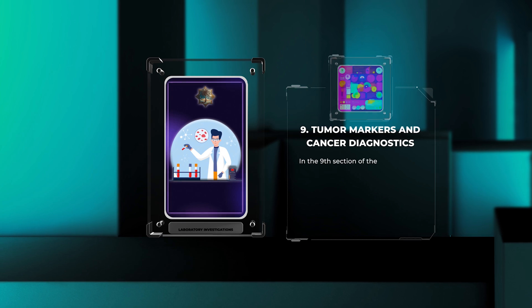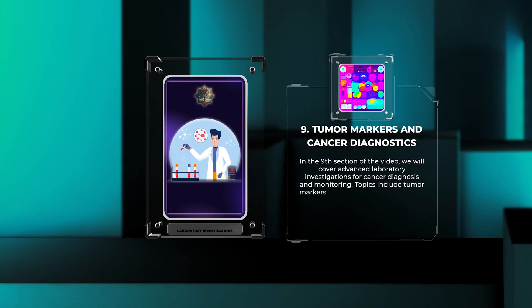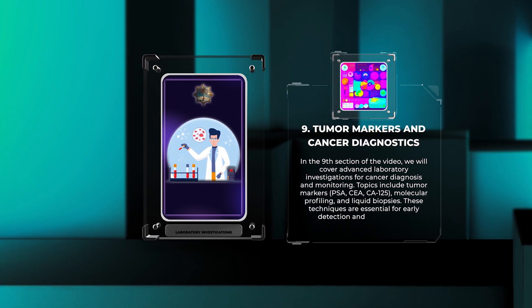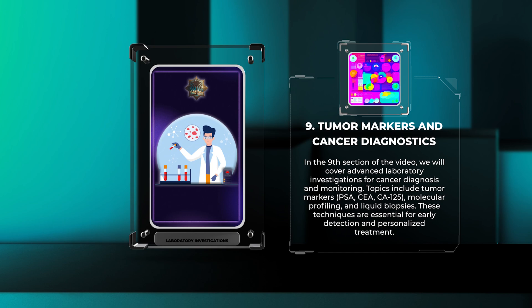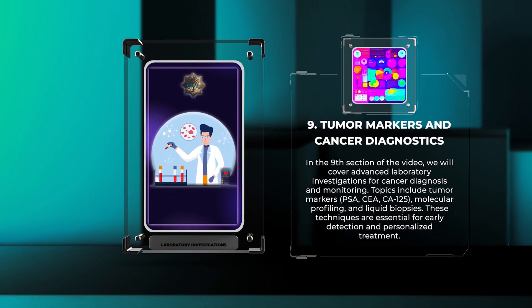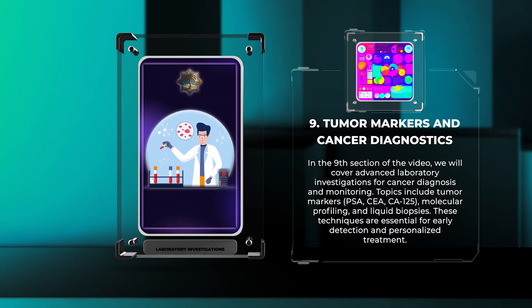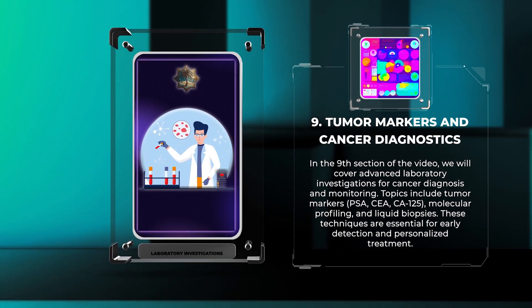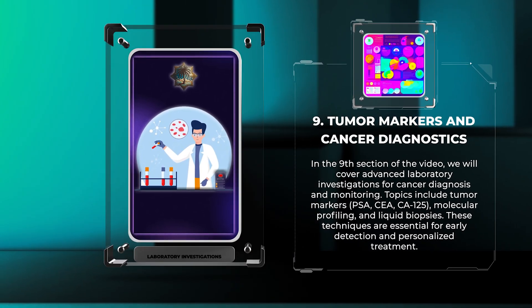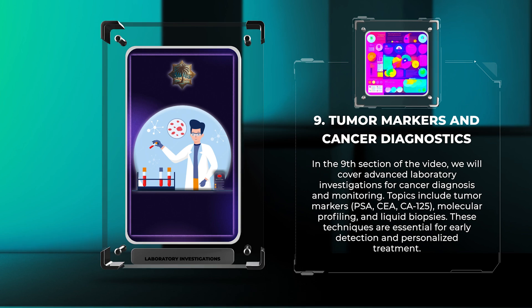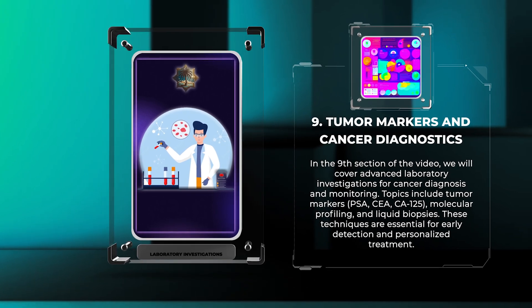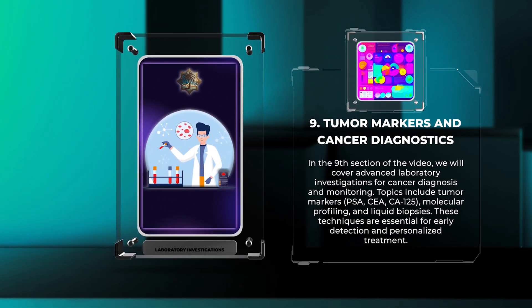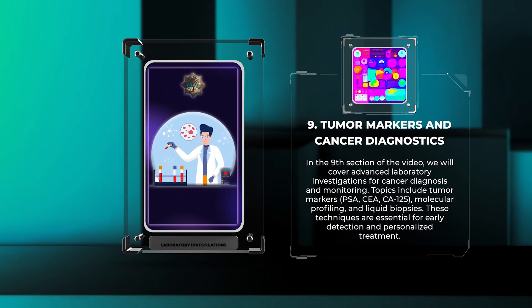In the ninth section of the video, we will cover advanced laboratory investigations for cancer diagnosis and monitoring. Topics include tumor markers such as PSA, CEA, and CA-125, as well as molecular profiling and liquid biopsies. These techniques are essential for early detection and personalized treatment.